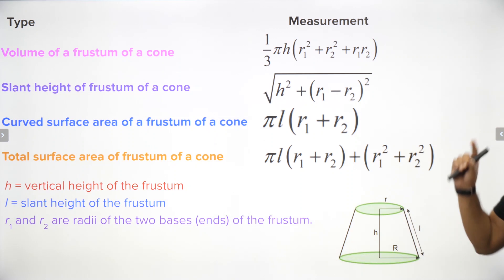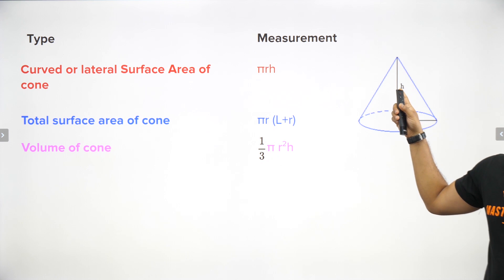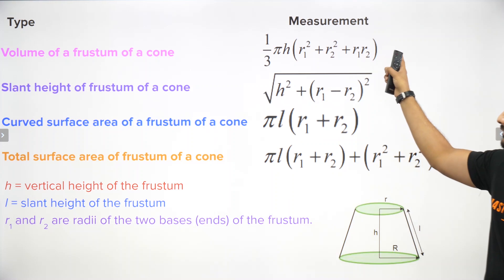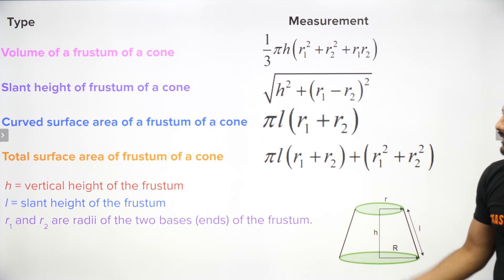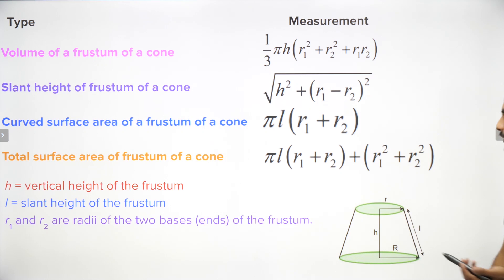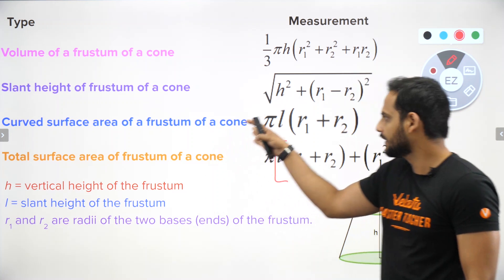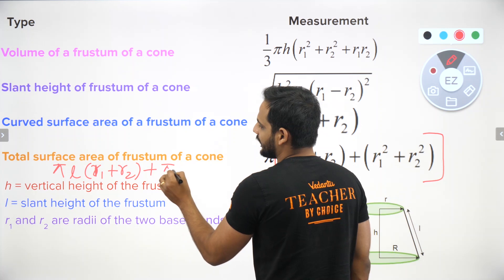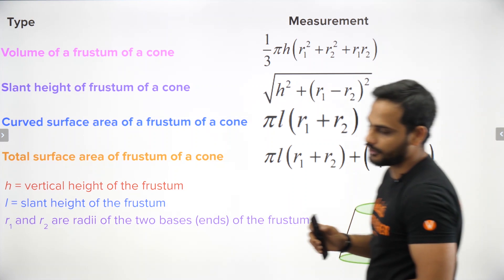For a frustum of a cone: volume is (1/3)πh(r₁² + r₂² + r₁r₂). Slant height is √(h² + (r₁ − r₂)²), where r₁ is the greater radius. Curved surface area is πl(r₁ + r₂). Total surface area is πl(r₁ + r₂) + πr₁² + πr₂². Do not forget to revise these frustum formulas — they are very important. Take a snapshot and keep it.